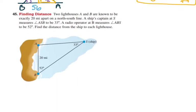Alright, and then the last guy here is finding two lighthouses. A and B are known to be exactly 20 miles apart on the north-south line, so it's completely vertical. A ship's captain at S measures the angle of ASB to be 33 degrees, mentioned in the diagram. And a radio operator at B measures angle ABS. And we need to find the distance from the ship to each lighthouse, meaning both side lengths. So that means I need to find this side length, which I'll call B, and this one, which we'll call A.